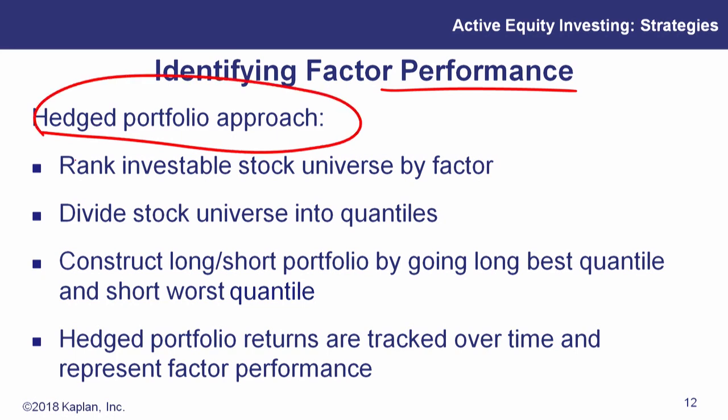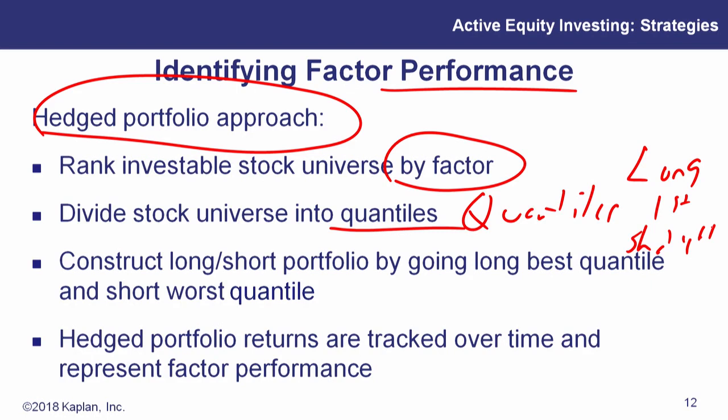So let's identify some factor performance. How does a hedge portfolio manager go about doing this? First thing, we're going to rank the whole universe that we're analyzing by some factor. Then we're going to divide the stock into quantiles or quartiles. Oftentimes we'll use quartiles, it's just easier. And then maybe we'll go long the first quartile and short the fourth quartile. We're going to track this portfolio over time and make sure that we keep a constant exposure to the factor that we want to emphasize.